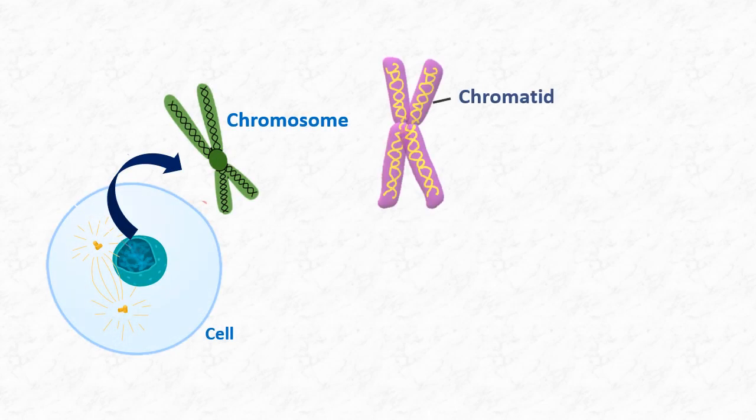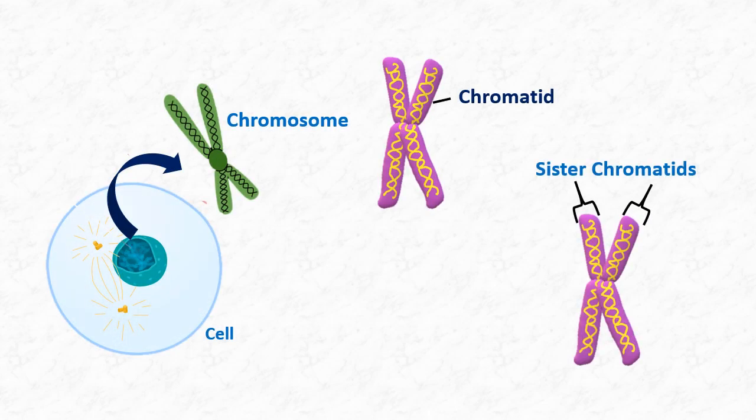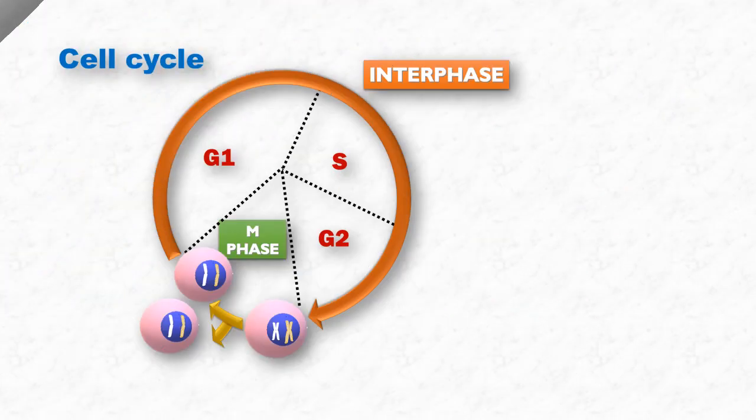In the last few lectures, we understood the terms chromosome, chromatid, and sister chromatids. We have also covered the cell cycle and interphase in detail. We now understand that a cell prepares itself for cell division.